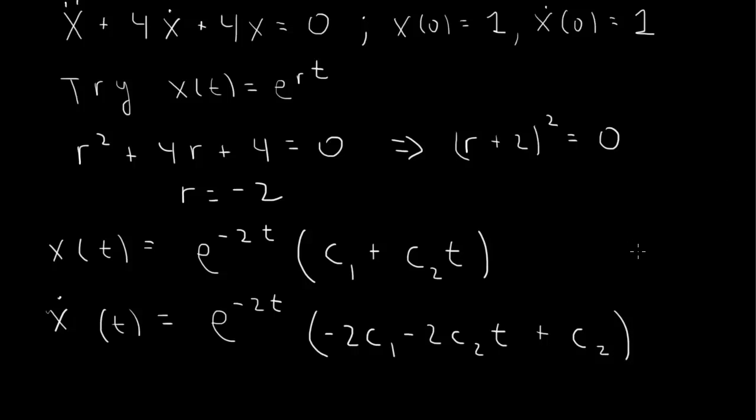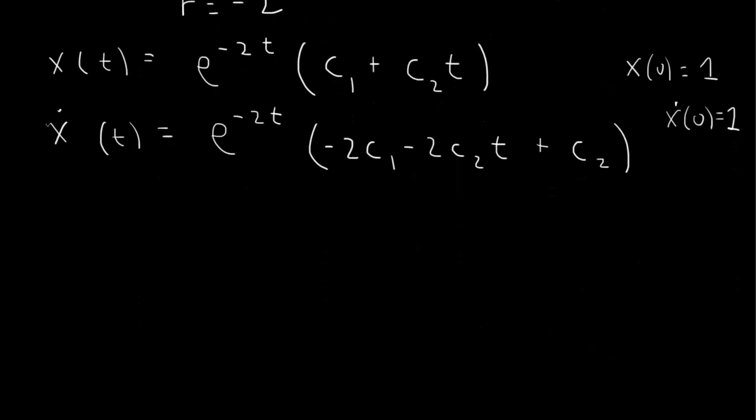So the initial condition here is x of 0 equal to 1. So e to the 0 is 1, c2 times 0 is 0, so that will just give us c1 equal to 1.